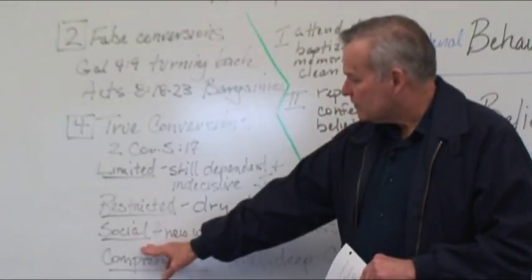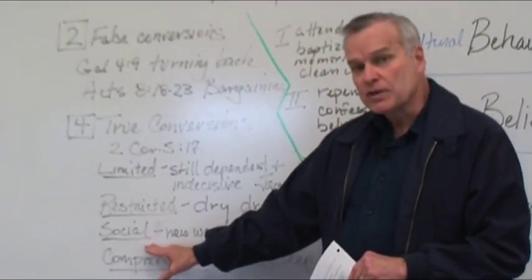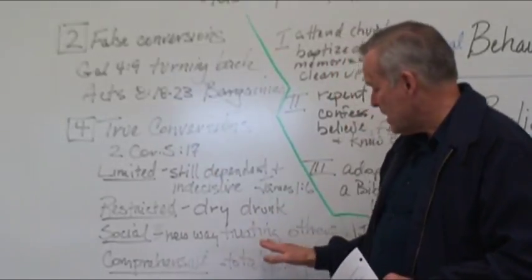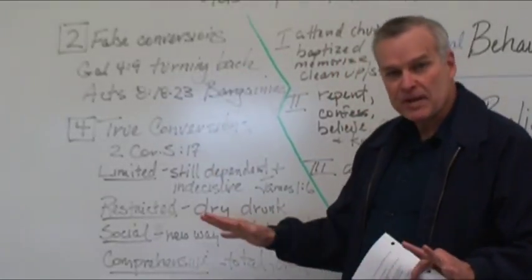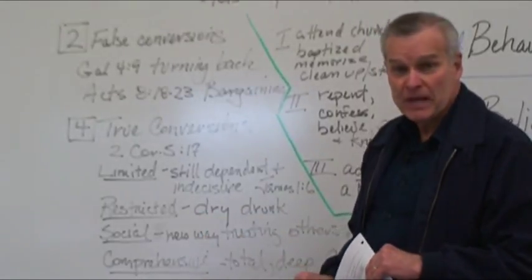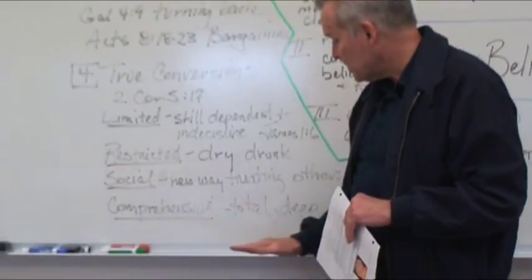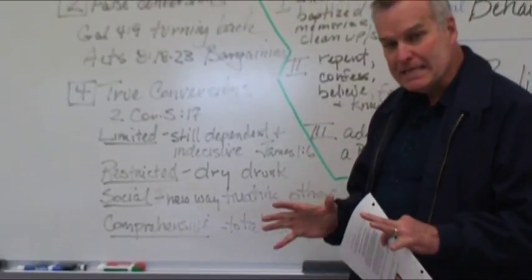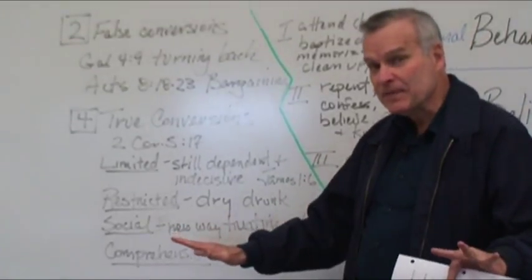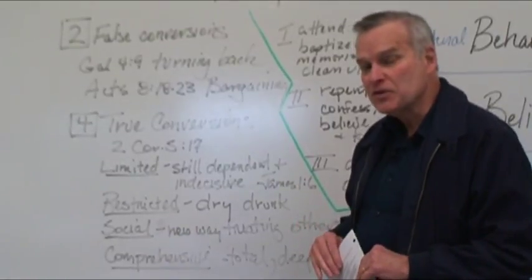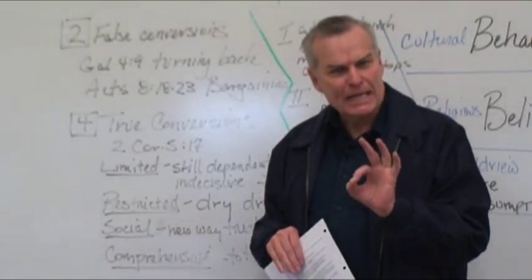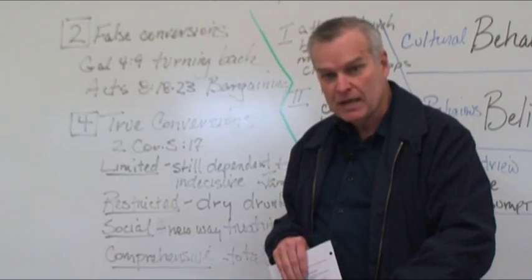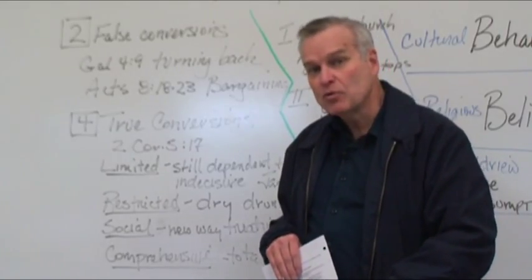A third kind of real conversion is social conversion. And this is the person whose roots have gone down deep enough that they have a new way of treating others. Now there's a fourth level, comprehensive. That's when the conversion is total and deep and comprehensive. Now in the second video on conversion, I want to talk about Paul Hebert's idea of three levels of conversion and what happens when we don't go to the deepest level.